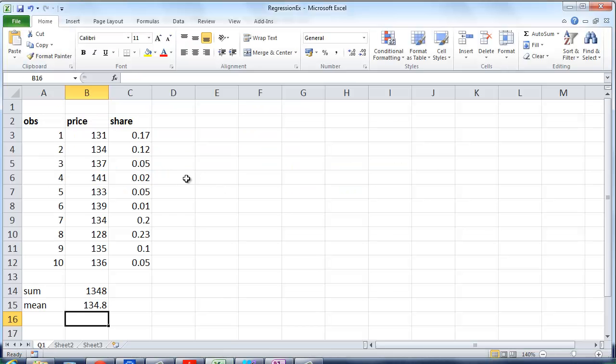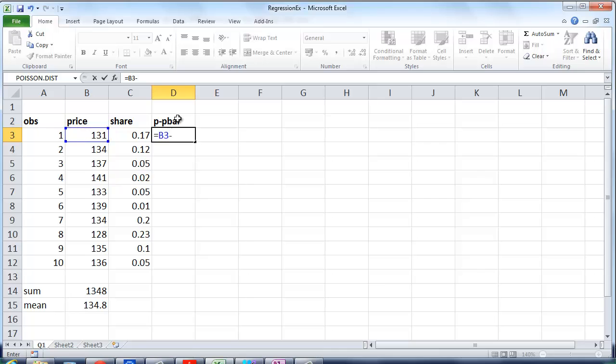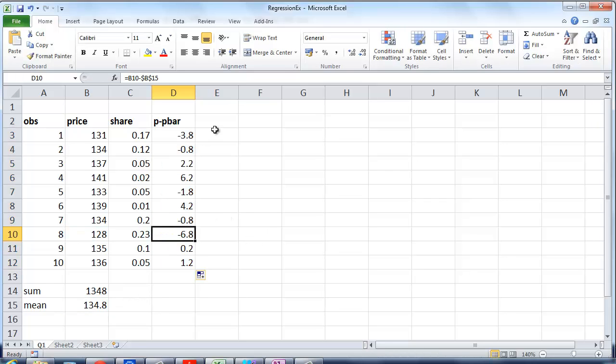And taking the square root will give us the sample standard deviation. So let's do that in Excel. What we need is a column p minus p bar, price minus p bar. Take the price minus the mean. That's here. That's p bar. We need to fix that with the dollar signs. And we can copy that down. So we've got the price minus p bar.